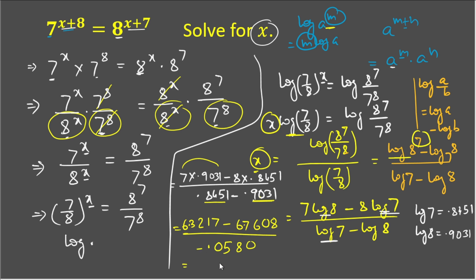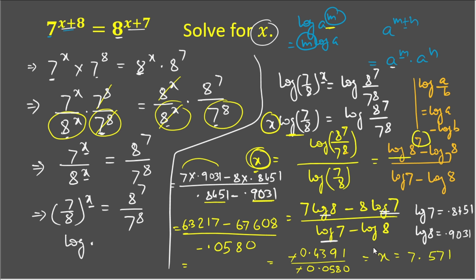The numerator value is negative and the denominator is also negative, so the two negatives cancel. Dividing −0.4391 by −0.0580, we get the value of x equal to approximately 7.571. This is the final answer. If you liked the video, please don't forget to subscribe. Thank you for watching.